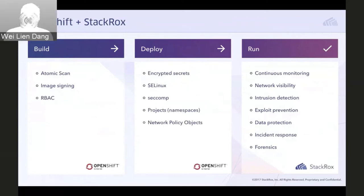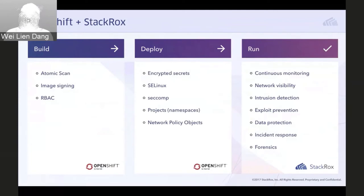Looking at how OpenShift and StackRox fit together — the OpenShift platform provides several security capabilities that enable you to securely build images and deploy containers. In the build phase, best practices require scanning container images for known vulnerabilities, establishing trust over image content, and appropriately limiting access to the container registry and cluster. OpenShift provides vulnerability scanning via atomic scan, allows image signing with GPG keys, and incorporates robust role-based access controls.